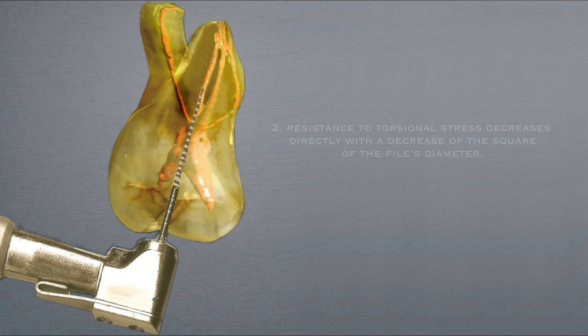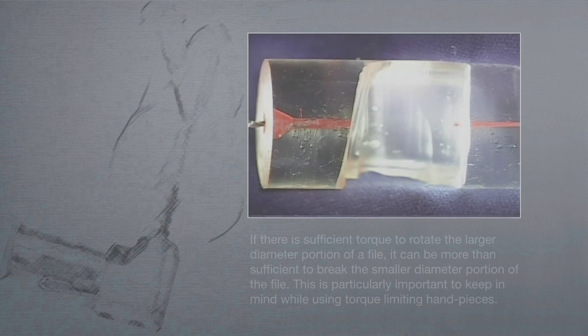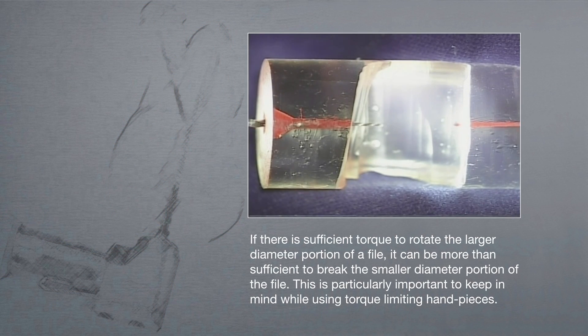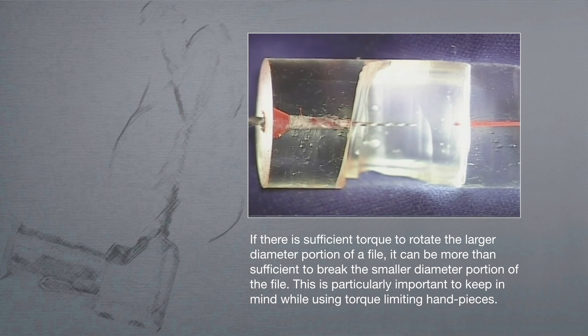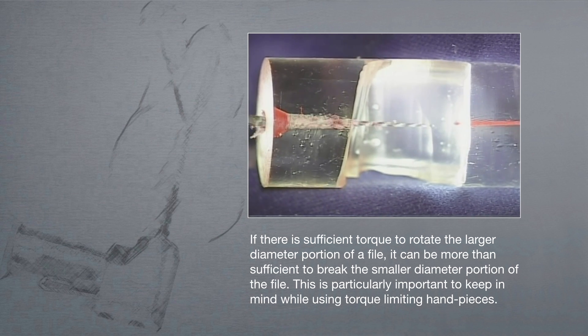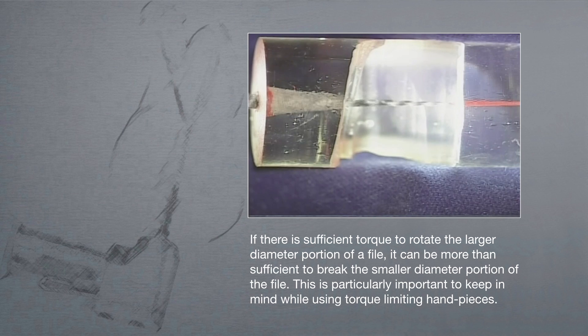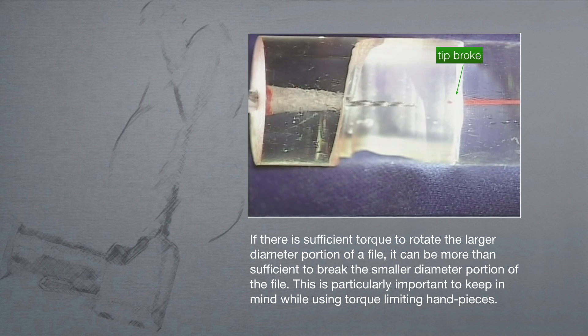The second file anatomy relationship states, resistance to torsional stress decreases directly with a decrease of the square of the file's diameter. If there's sufficient torque to rotate the larger diameter portion of a file, it can be more than sufficient to break the smaller diameter portion of the file. This is particularly important to keep in mind when using torque-limiting handpieces.